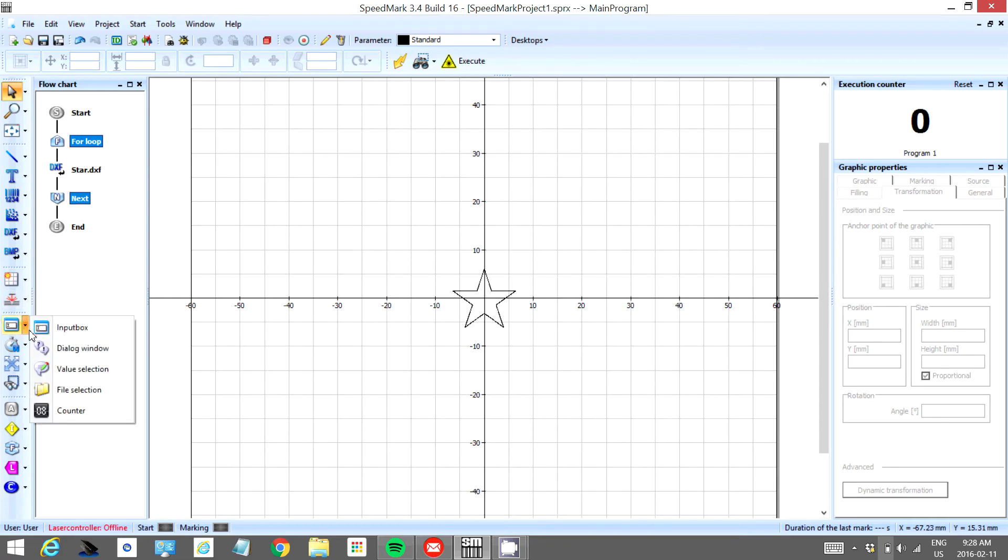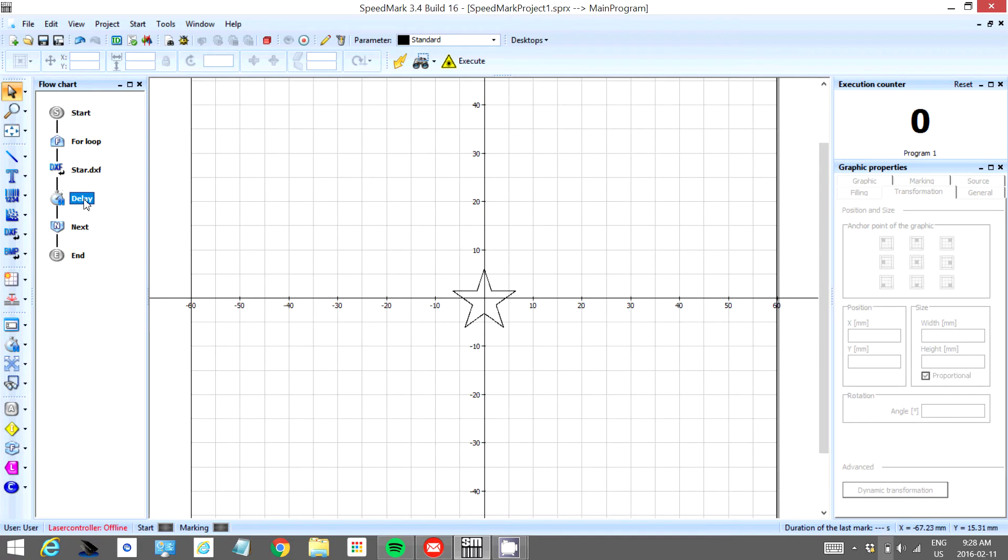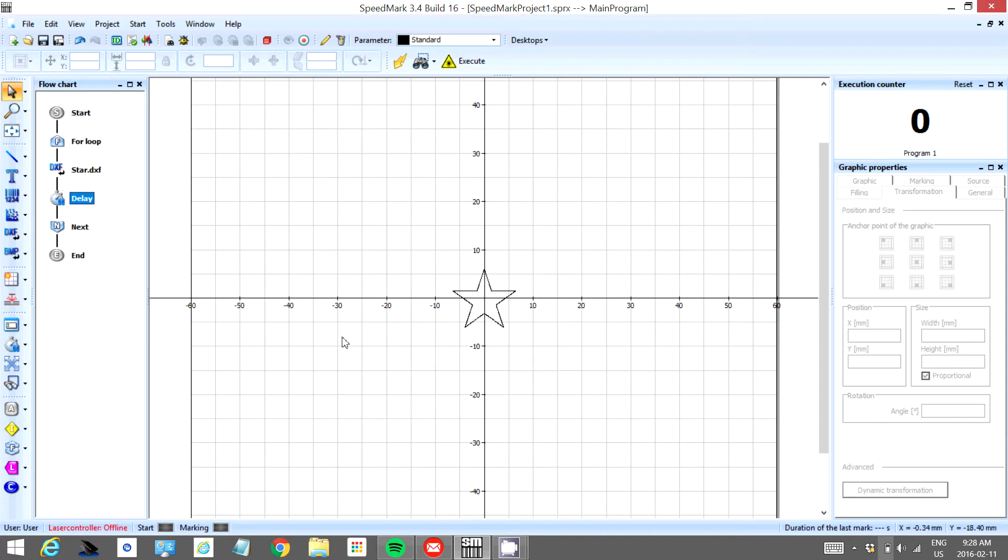We're going to set a delay right after we hit the star, just to let the laser breathe a little bit. When we double click that, I enter in 500 milliseconds or half a second. And now the machine will start. It will start a loop, engrave the star, wait half a second and keep doing that seven times and then end.